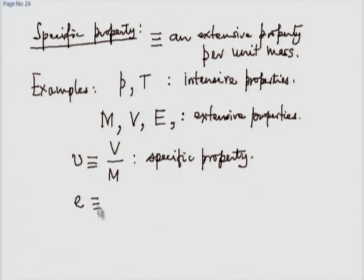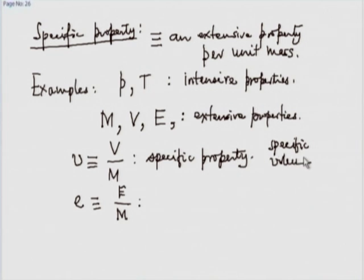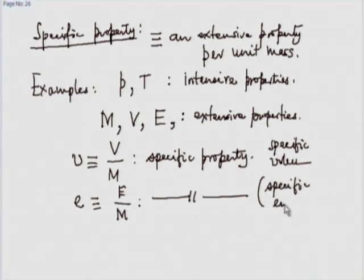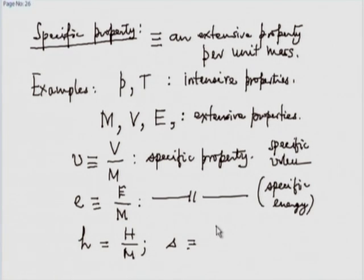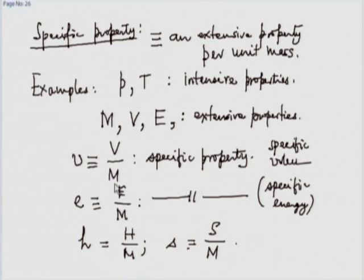Similarly, energy E per unit mass is known as specific energy — this also is a specific property. Specific enthalpy will be H by M, and specific entropy will be S by M. The only exception is density, which is not per unit mass but is mass per unit volume — it is the reciprocal of specific volume, but it is also a specific property in some sense.